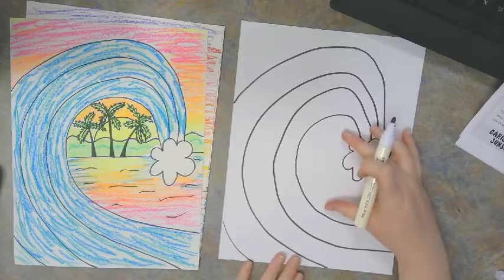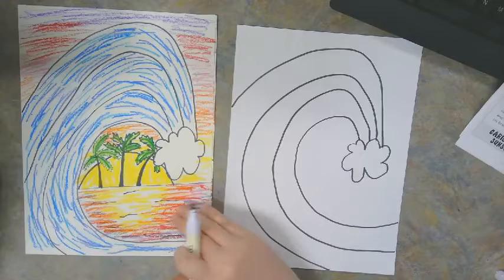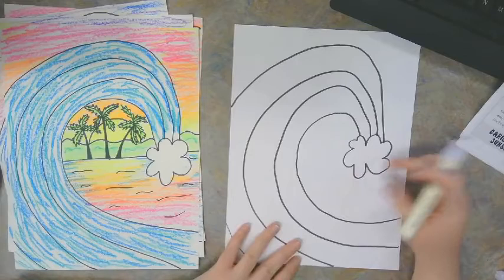Alright, after you have the wave done is when we can add the horizon line. Now depending on how much room you have here, your horizon line might be different. So every time I've drawn this, it turns out a little bit differently. You'll see here my horizon line jumps and bumps over my wave. But on this one, my horizon line is actually going under my wave, completely under it. I didn't have to jump and bump that line. So each time I do it, it turns out a little bit differently. So it's okay if yours looks different from mine.